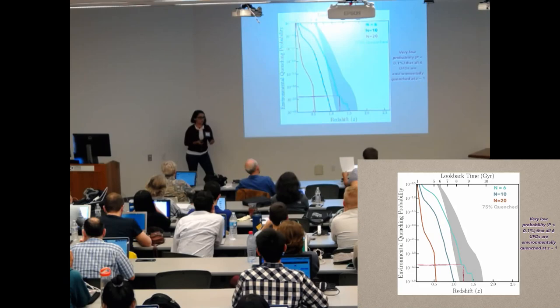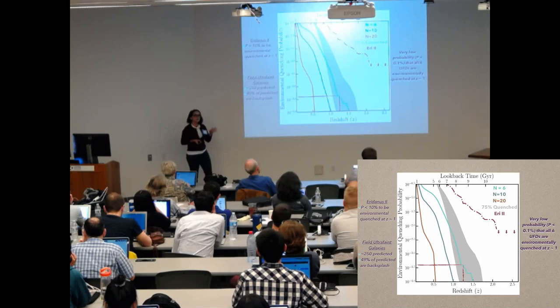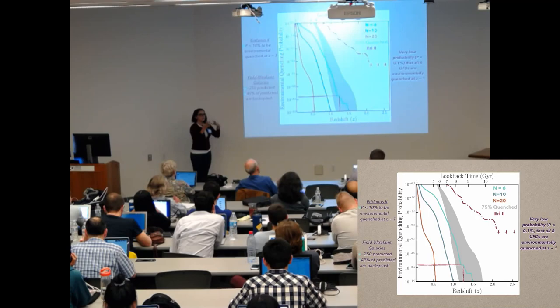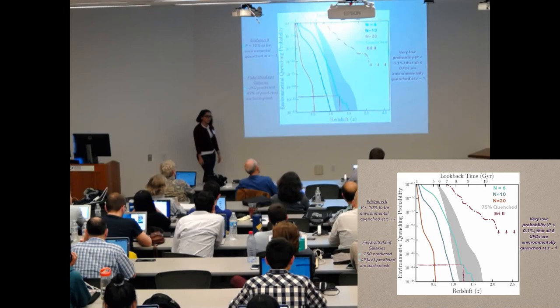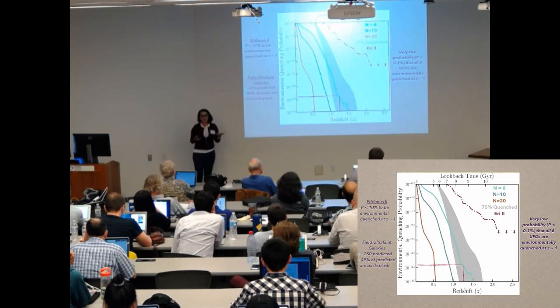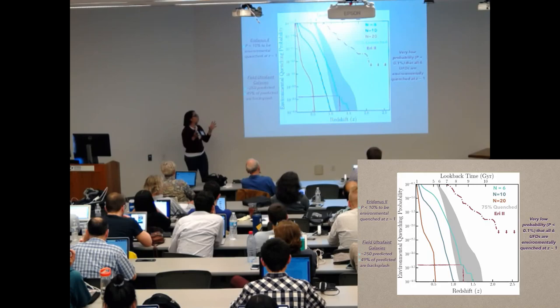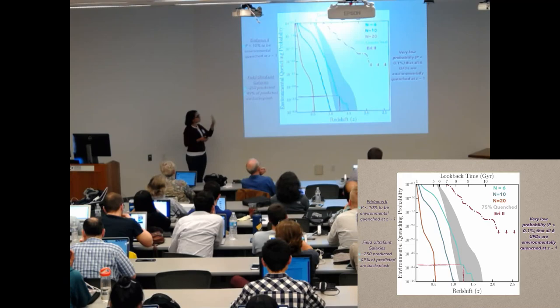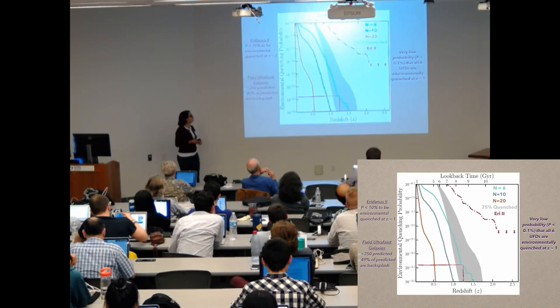And the last point that I looked at was these kind of unique ultrafaint dwarfs. For example, Eridanus 2. Eridanus 2 lives about right at the virial radius of where we think the Milky Way's dark matter halo is. So even playing the same game where I'm selecting just one ultrafaint dwarf galaxy that looks like Eridanus 2 in the Elvis simulations, there's a 10% chance that it was environmentally quenched. But having this population of six that are close by that we know have ancient stellar populations still provides a better constraint to the mechanism that quenched the star formation. So we're going to stick with this 0.1% probability.